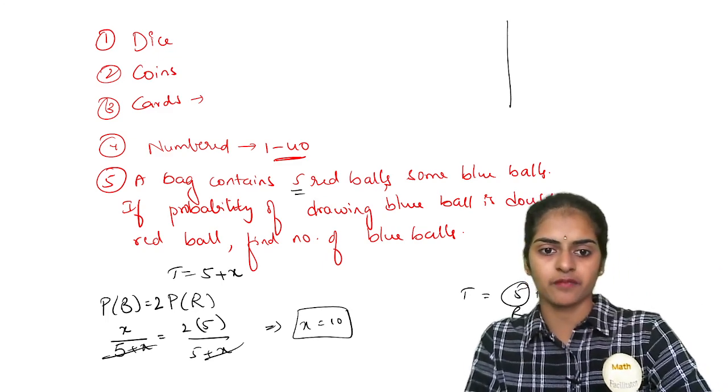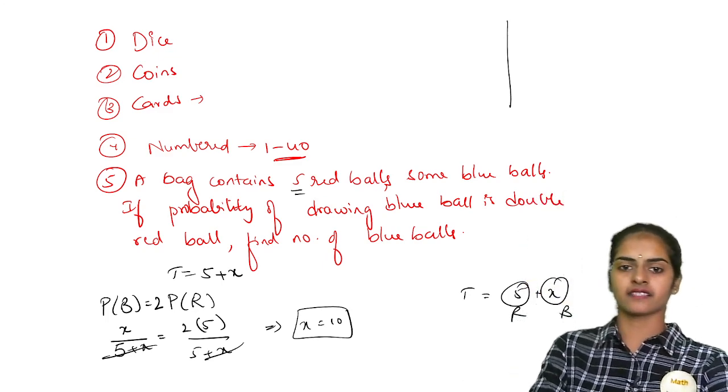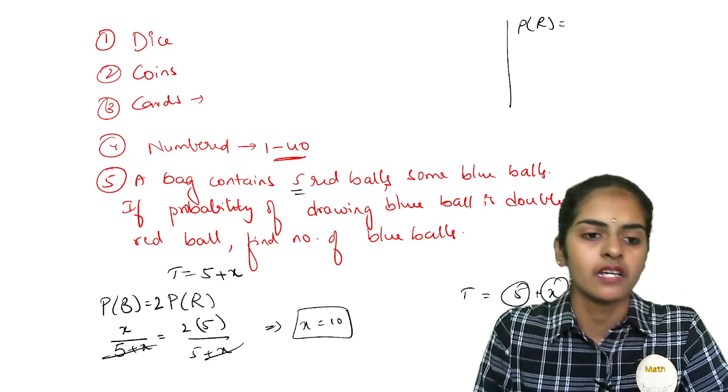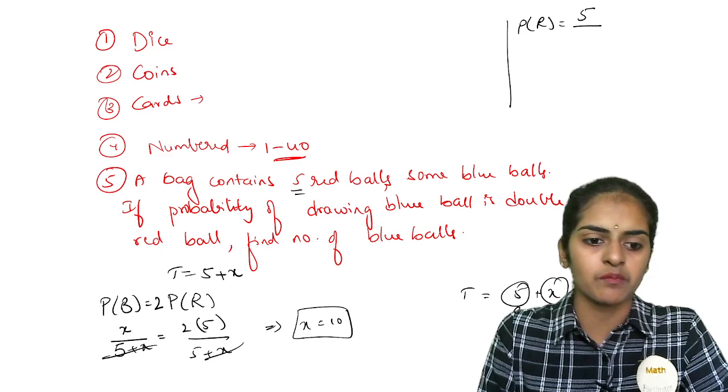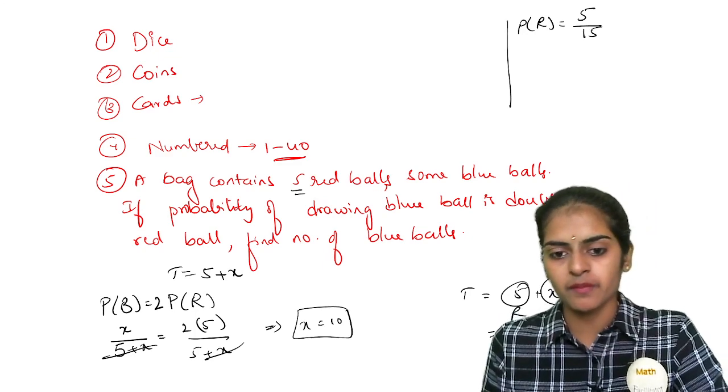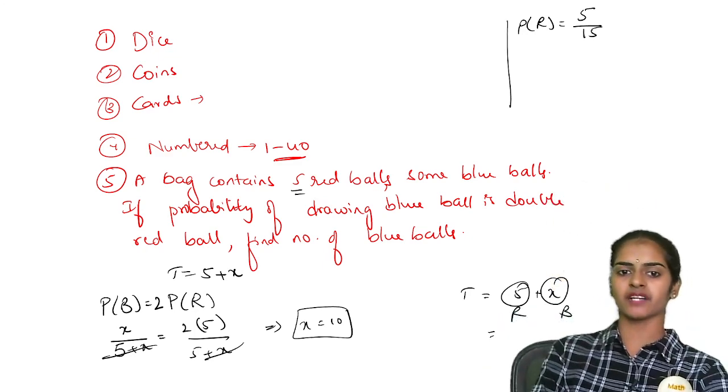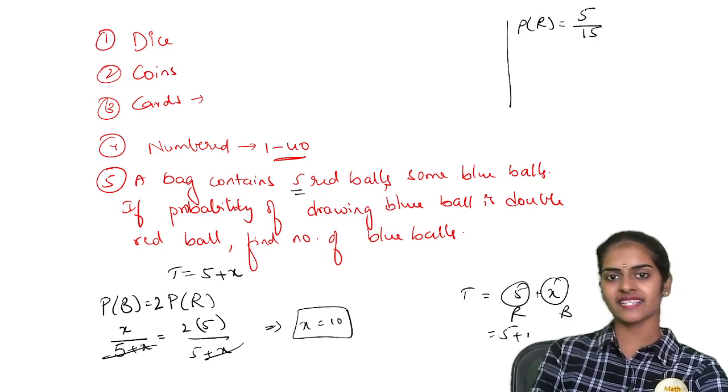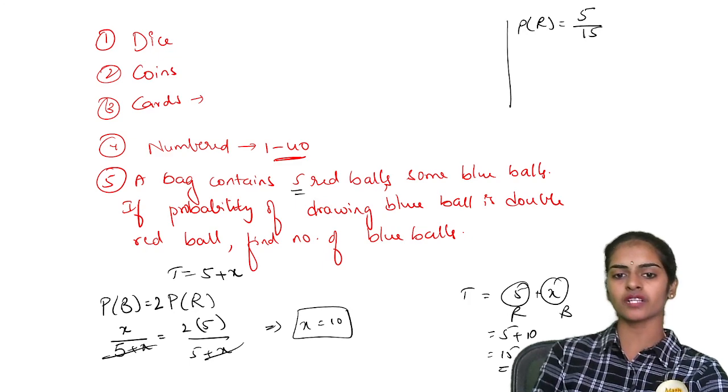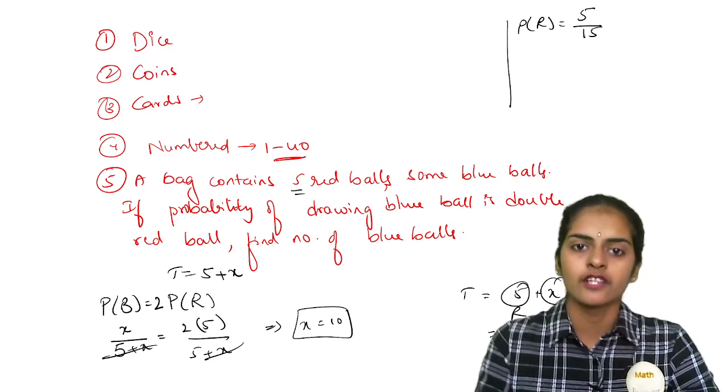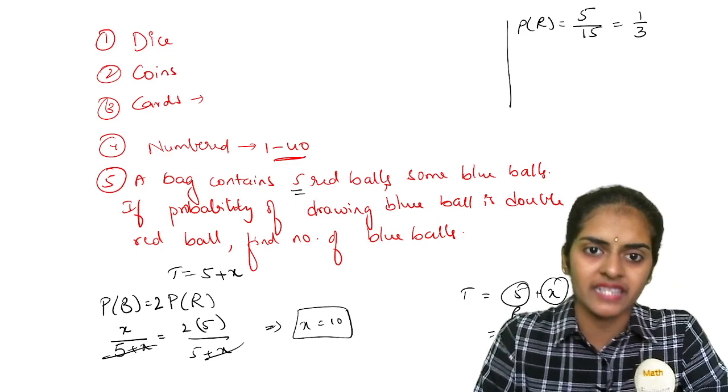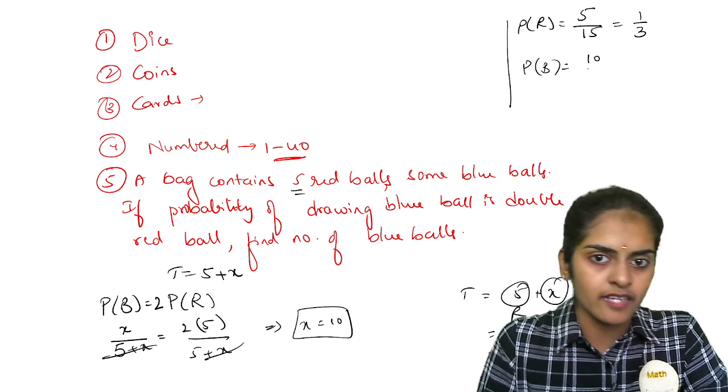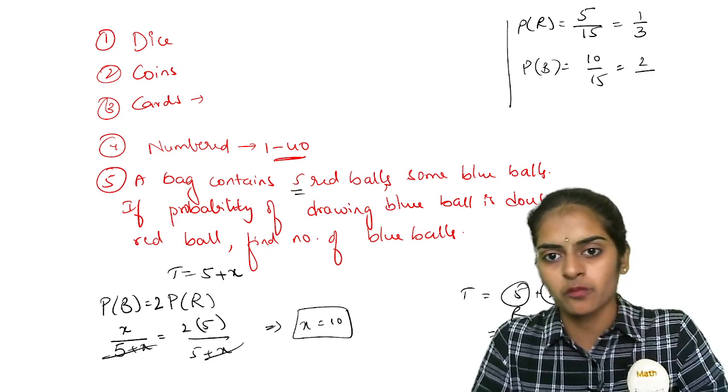Is that clear people? How will you check this? For example, see here. This is the total number. I am doing the checking. Probability of red ball is 5 by total number. Total number will be 5 plus x, which is 5 plus 10. So this is 15 is the total. 5 by 15 is 1 by 3 and probability of blue ball is 10 by 15 which is 2 by 3.